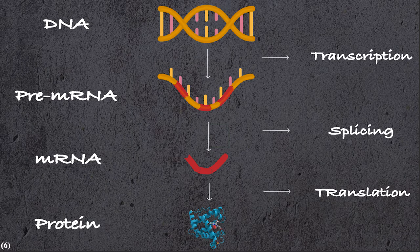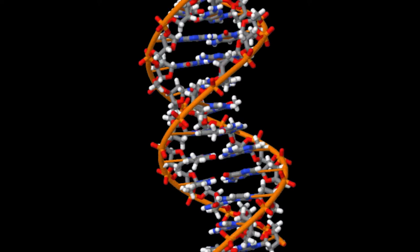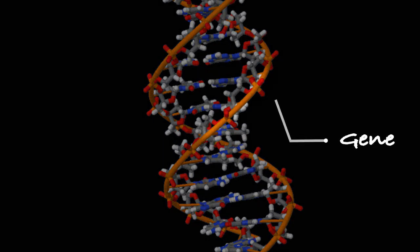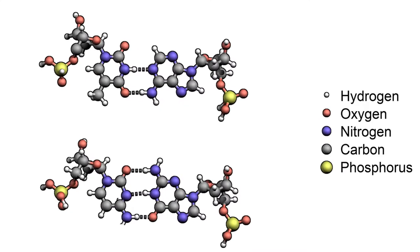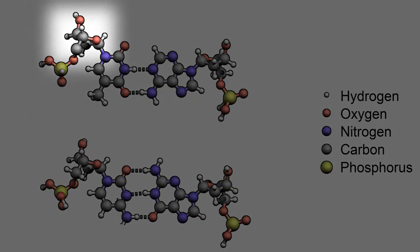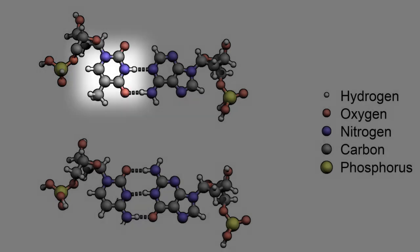The SMN protein itself is a product of the transcription, splicing, and translation of the SMN genes. A gene is a sequence of DNA which holds the information for making functional proteins. The codes in DNA are like binary digits in computer code, but instead of 0 and 1, it uses four different types of nucleotides. A nucleotide is a simple unit of a DNA molecule, which is composed of a sugar, a phosphate, and a type of nitrogen-containing base.